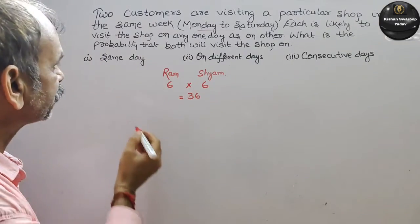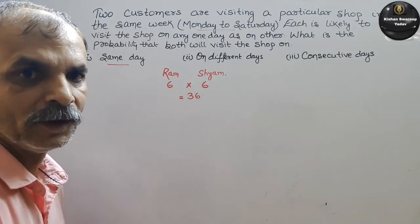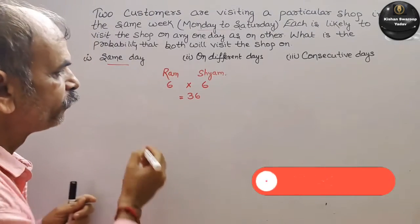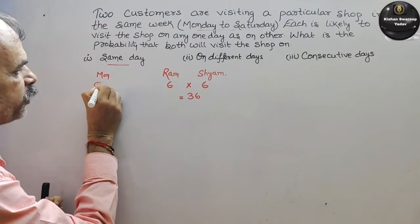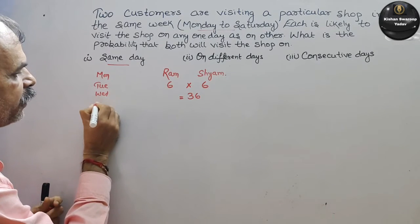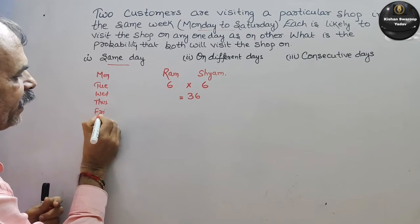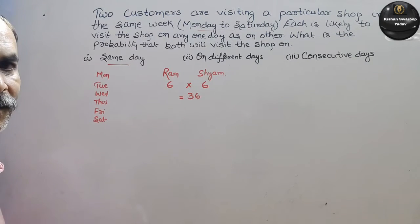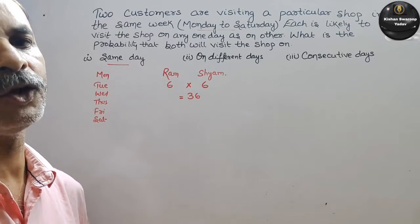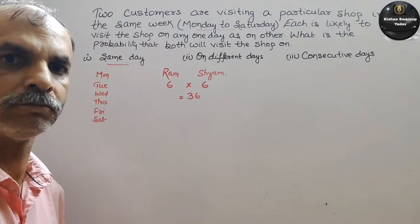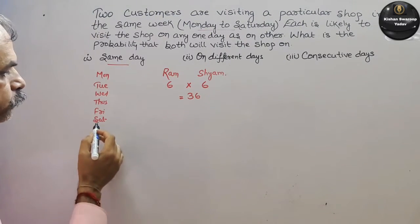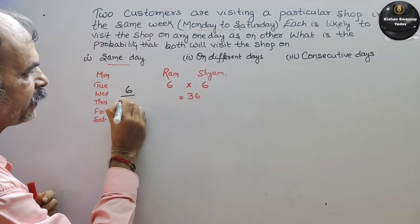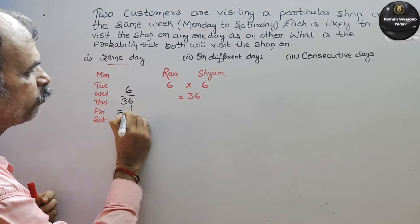Question क्या है? इसने कहा कि दोनों same day जाएंगे. तो same day के cases: Monday, Tuesday, Wednesday, Thursday, Friday, and Saturday — number of favorable cases कितने हैं? Six only. तो same day में probability क्या हो जाएगी? Six by 36, that is equal to one by six.